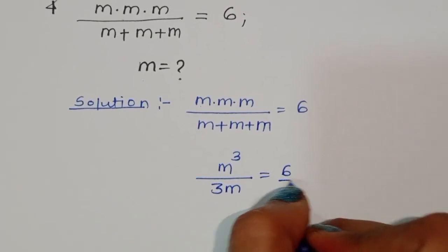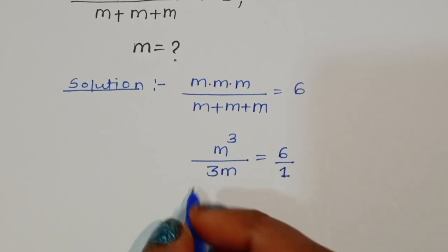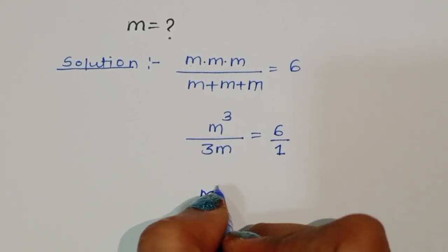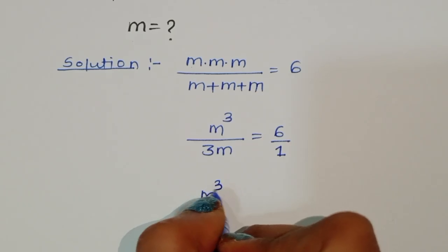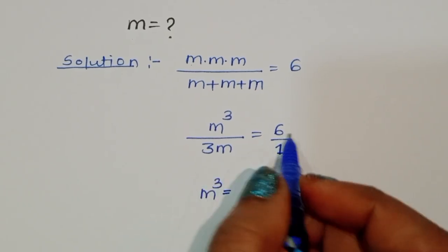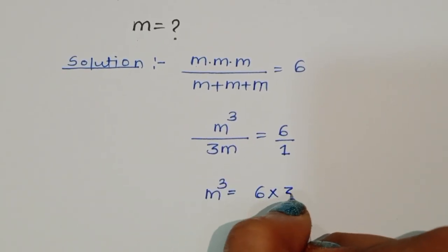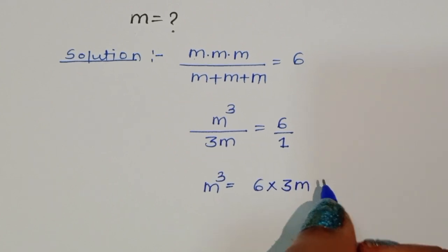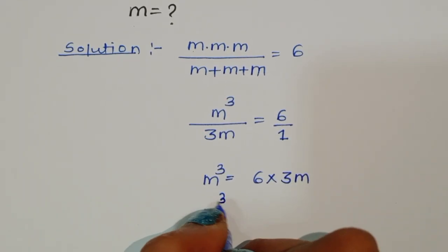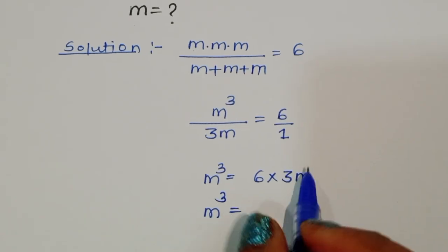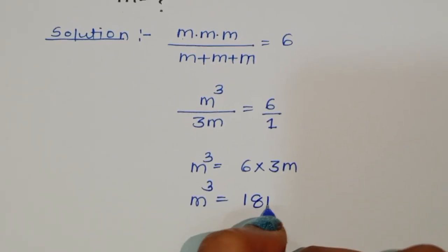Now we can do cross multiplication. After cross multiplication, we get m cubed is equal to 6 times 3m, which gives us m cubed is equal to 18m.